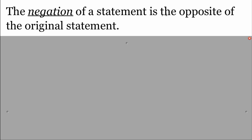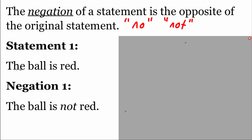When we're dealing with these logical statements, there are a few different things we can do with them. The first one is a negation. The negation of a statement is the opposite of the original statement. The easiest way to negate a statement is to add either a 'no' or a 'not' to the statement — that would make it say the opposite of what it originally said. If we look at this first statement, it says 'The ball is red,' so its negation would say 'The ball is not red.' By adding that 'not,' it changed this to its opposite.